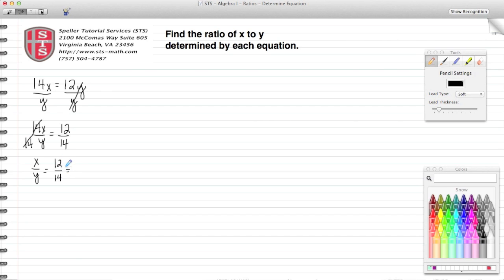As usual, whenever you have a fraction, you want to simplify your fraction. I can divide both of these numbers by 2. 12 divided by 2 is 6, and 14 divided by 2 is 7.